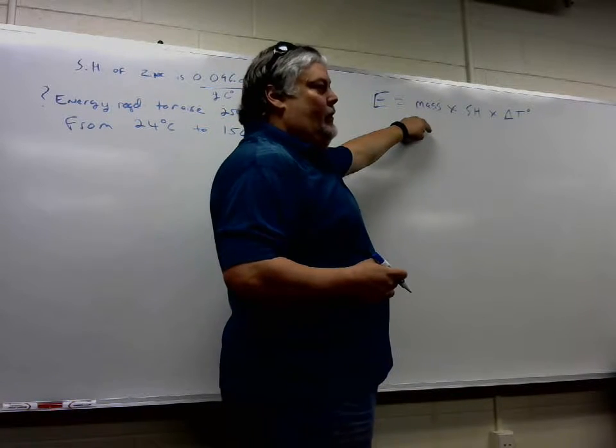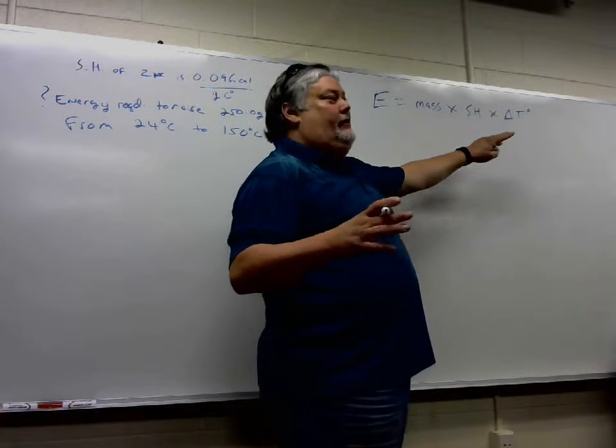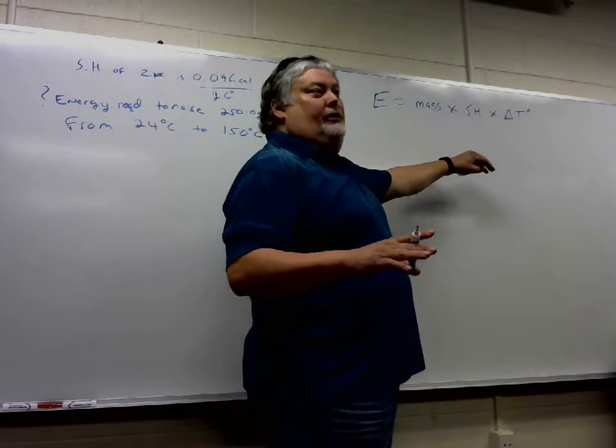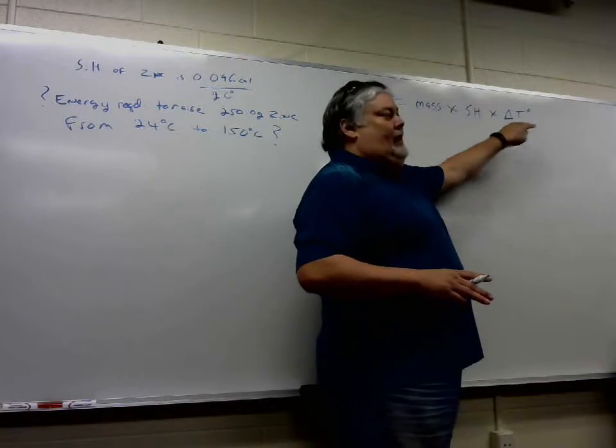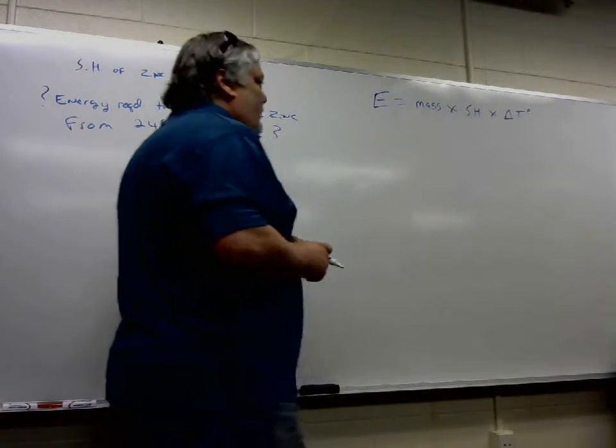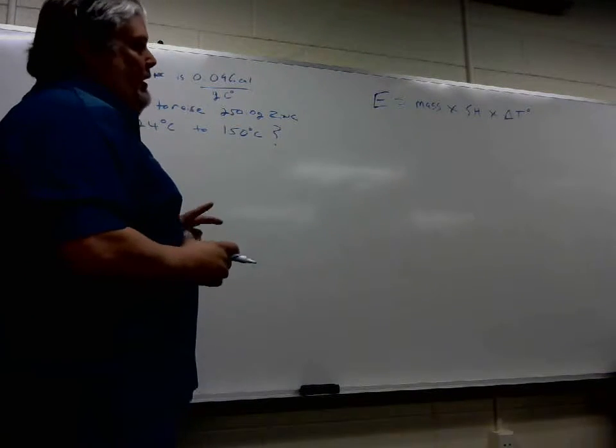To determine the number of calories using the heat equation, you have to know the mass of the object being heated or cooled, you have to know the specific heat value which will be given to you, and you also have to have the delta T, which is just a fancy way of saying temperature difference.